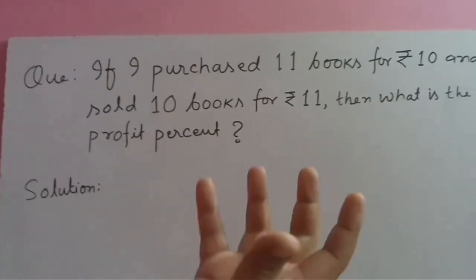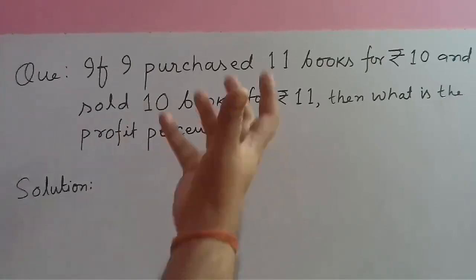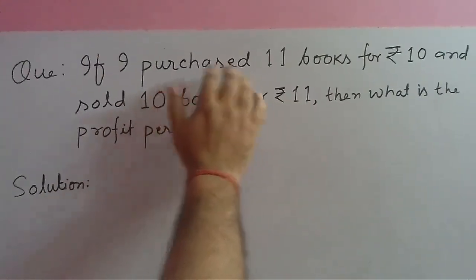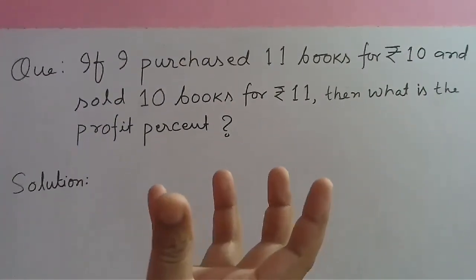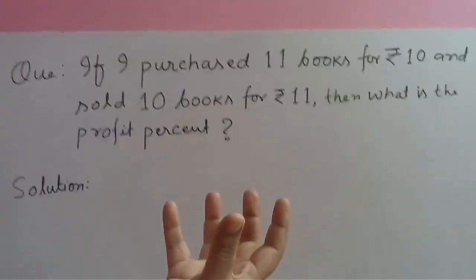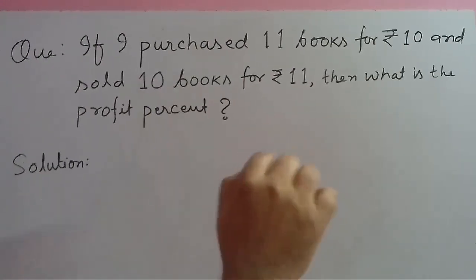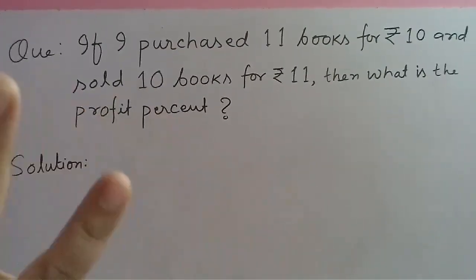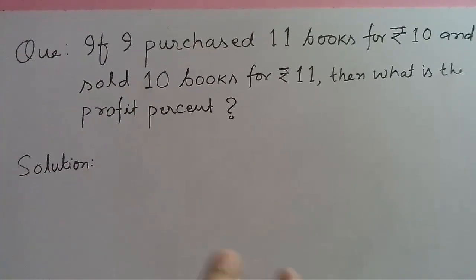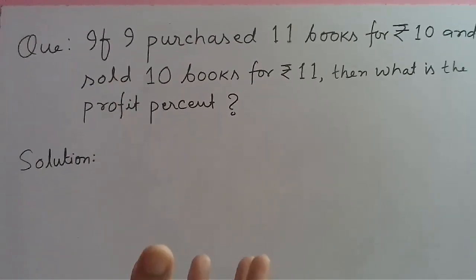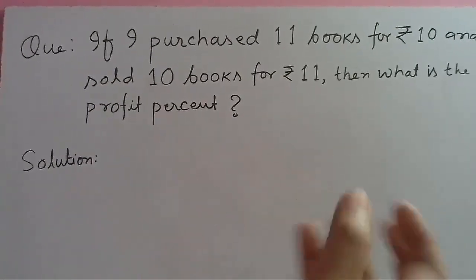But they are difficult numbers. Cost price of one book is 10 by 11 which is not so easy and selling price of one book is 11 by 10. This is not so easy. Then what is profit or what is loss? This is difficult to find.